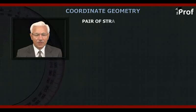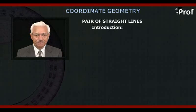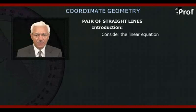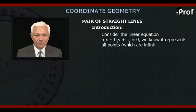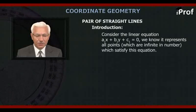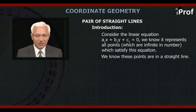Introducing the concept of pair of straight lines. Consider the linear equation a₁x plus b₁y plus c₁ equal to 0. We know it represents all points which are infinite in number which satisfy this equation. We know these points are in a straight line.